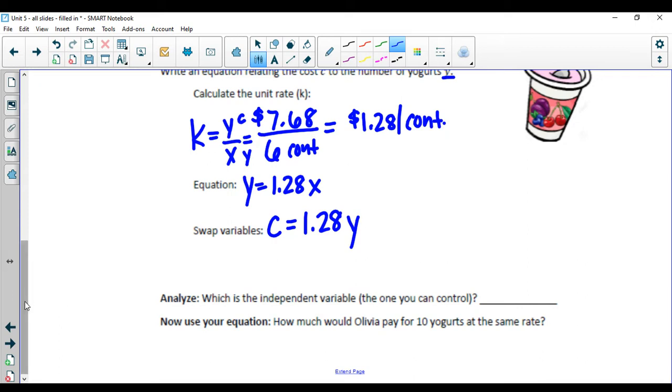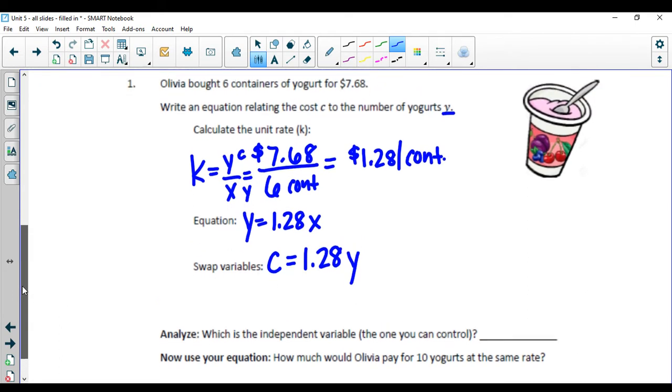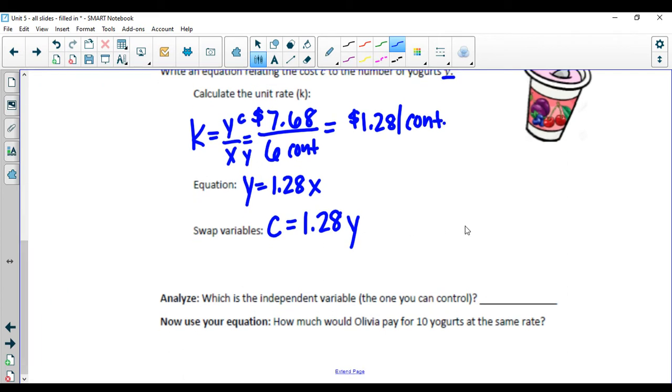So our cost is equal to $1.28 times the number of yogurts we buy, which is the independent variable, the one that we can control. We control the number of yogurts that we buy. The price depends on how many we actually buy. So the price is dependent. The independent variable is the number of yogurts.